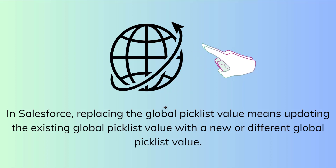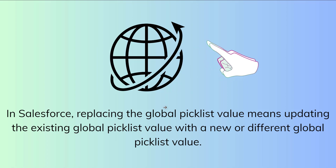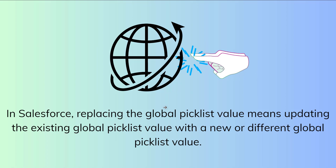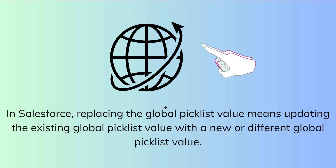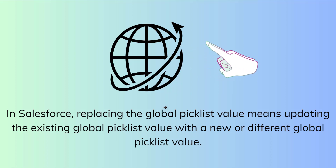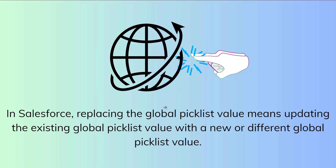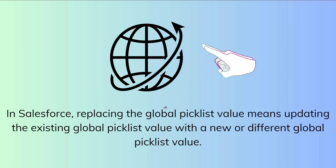If you want to replace the value France with Canada, you remove France from the global picklist and replace it with Canada. After replacing, France will no longer appear as a selection option, and existing records that had France as a value will automatically be updated to Canada.